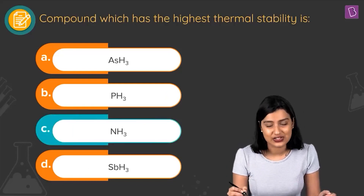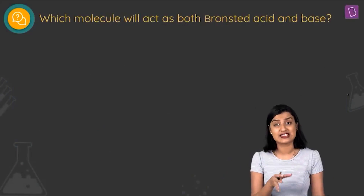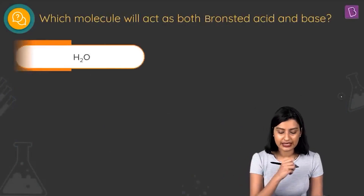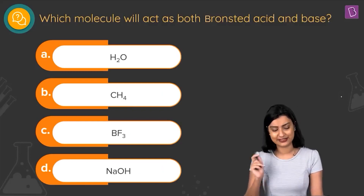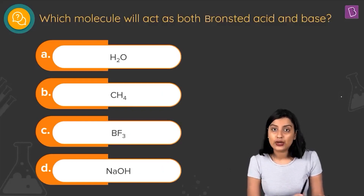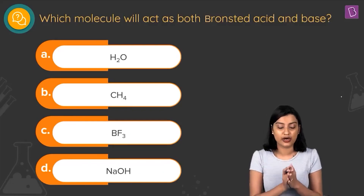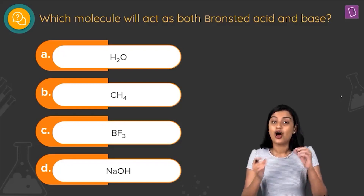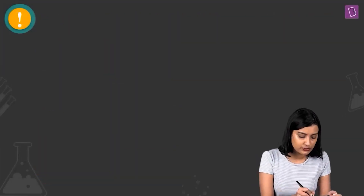The next question asks which molecule will act as both a Bronsted acid and base. The options are: H2O (water), CH4 (methane), BF3, and NaOH. We need to identify which one can behave as both a Bronsted acid and a Bronsted base.